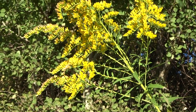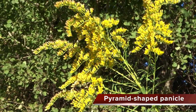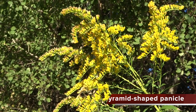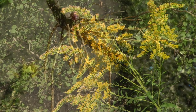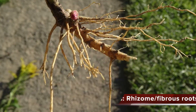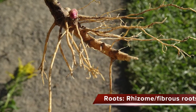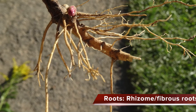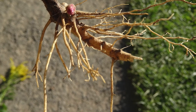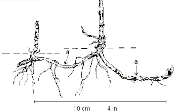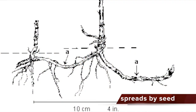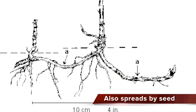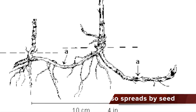Flowers are golden yellow and form dense pyramid-shaped panicles at the top of the plant. Canada goldenrod has rhizomes and fibrous roots which allow it to form large dense patches. In addition to rhizomes, goldenrod can spread by wind-dispersed seeds.